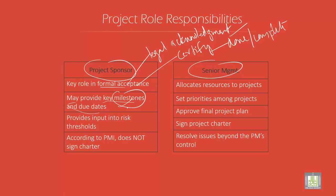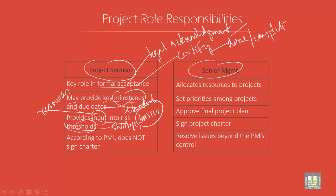It may provide key milestones and due dates. Milestones are particular dates — for example, when you have major changes in your technology. Due dates represent the schedule. It also provides input to risk thresholds — data and resources related to risk issues — to address any shortages, drawbacks, or barriers to make the project run smoothly.